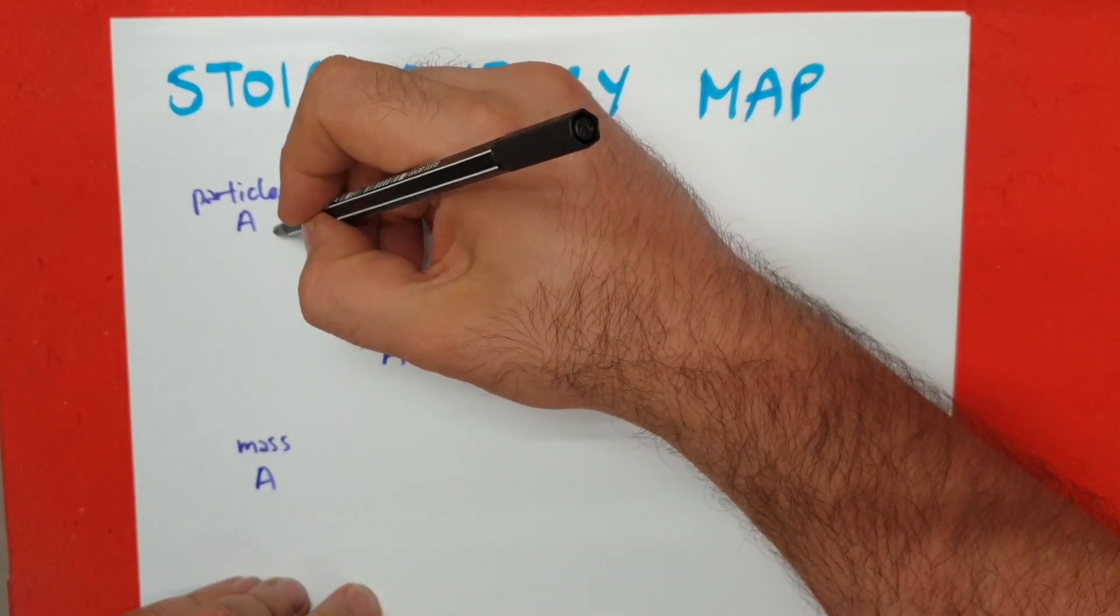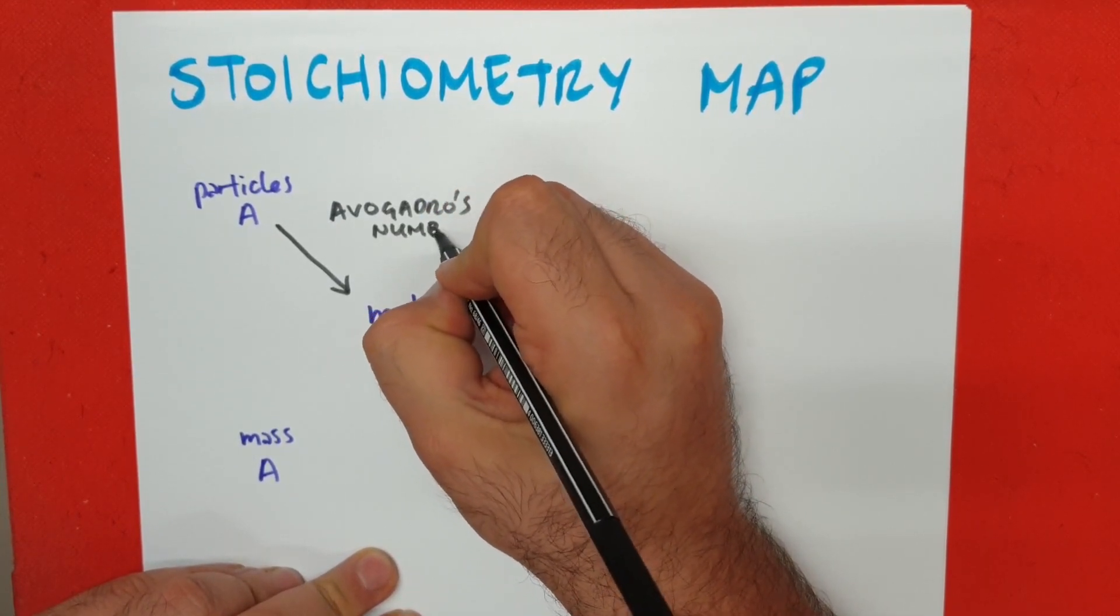So looking at this map, we can convert from these quantities using different dimensional factors. In this case, if I want to go from particles of A to moles of A, the factor I'm going to use is Avogadro's number.